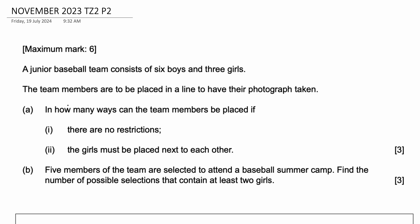It's a permutation combinations question. A junior baseball team consists of six boys and three girls. The team members are to be placed in a line to have their photograph taken. Part A: In how many ways can the team members be placed if (i) there are no restrictions, (ii) the girls must be placed next to each other.